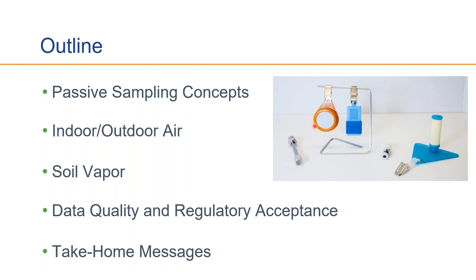A growing number of vapor intrusion assessments rely on passive samplers for measuring VOCs in air, but developing a project plan can be overwhelming due to unfamiliarity with the technology or concern about regulatory acceptance. Today's goal is to share practical guidance on how passive samplers can be successfully incorporated into a vapor intrusion investigation. We'll cover passive sampling concepts, how they work, how air concentrations are calculated, benefits and limitations, commonly utilized samplers, soil gas applications, and data quality and regulatory acceptance.